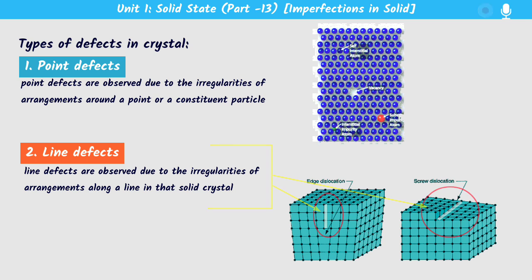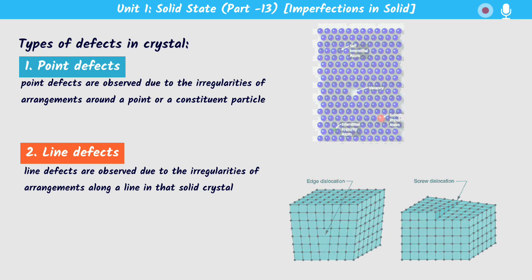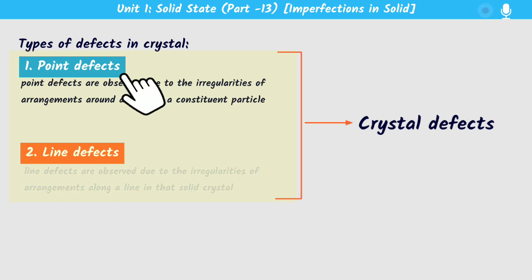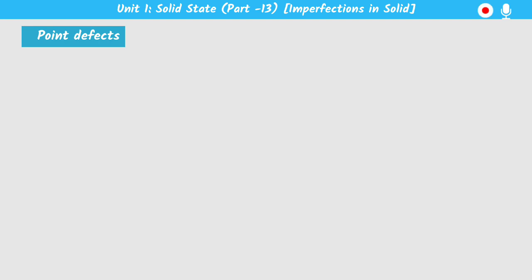In the case of line defects, irregularities are observed along a row — that means along the arrangement of constituent particles. Both these are combinedly known as crystal defects. In our syllabus only point defects are there, so we are going to focus on point defects.